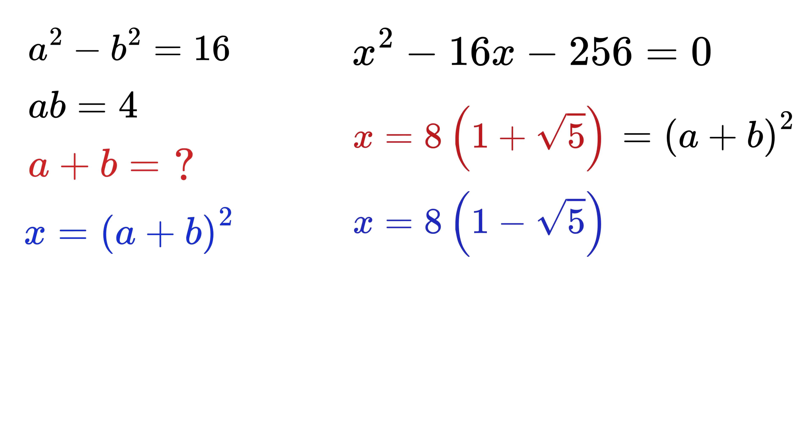So we have A plus B whole square equals these two values. Now, simply take the square root of both these values and we get A plus B as plus minus square root of 8 times 1 plus root 5 or plus minus square root of 8 times 1 minus root 5. And that's it.